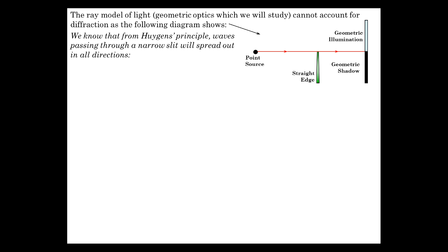That's what that would predict. But Huygens principle, we know that when we go through a narrow slit, and we have waves passing through a narrow slit, they spread out in all directions. And that's inconsistent with this transition, this edge. Because again, it doesn't matter if there is just one edge or two edges.